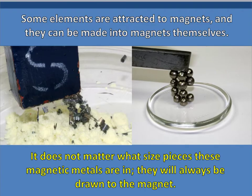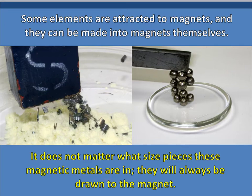Another kind of intensive property is magnetism. There are some elements that are attracted to magnets, so you can use a magnet to pick them up, and there are some elements that can be made into magnets themselves. Being able to be made into a magnet has nothing to do with your size — either you can be a magnet or you cannot be a magnet. So magnetism is another example of an intensive property. It does not matter what size the pieces of magnetic metal are; they are just either drawn to the magnet or they are not, so size has nothing to do with it.